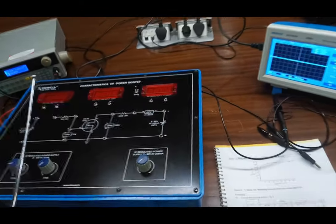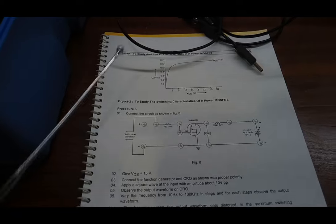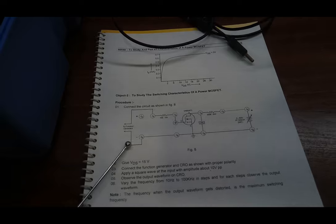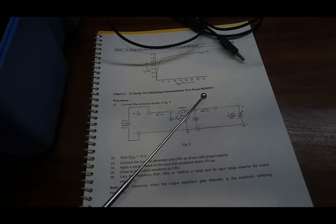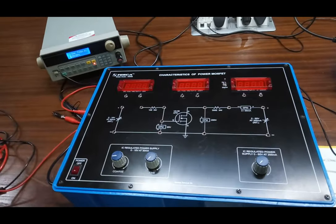Now we move on to the second experiment which is to study the characteristics of a power MOSFET. For this circuit, we have to connect the function generator at this terminal and a CRO on the drain source terminal to observe the output waveform. So for this, we make the connections.